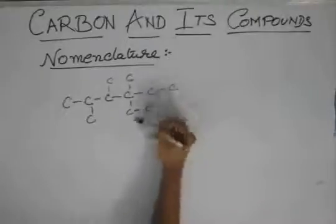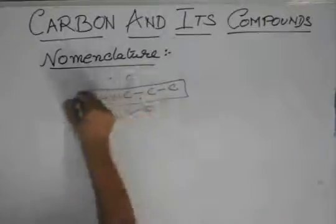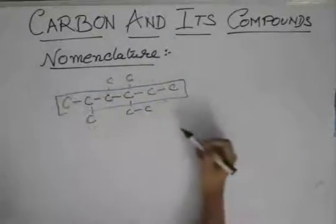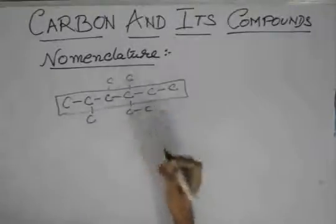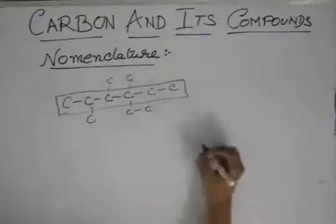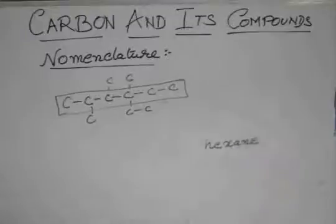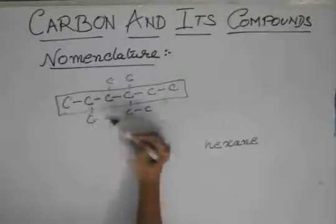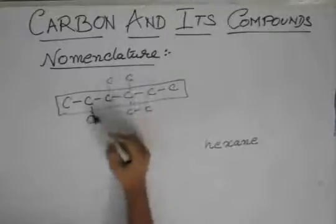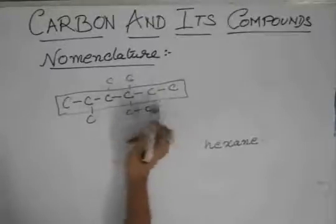So they are both equal. We take this as the longest chain, and it is 6-membered. First we write hexane and then we start taking the groups into account. There are 3 methyl groups and 1 ethyl group on this.